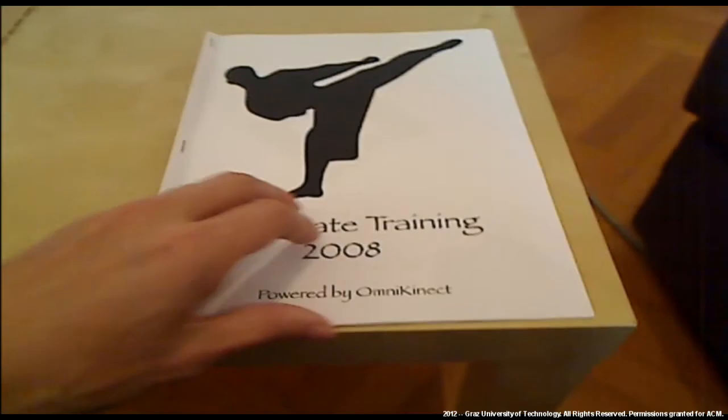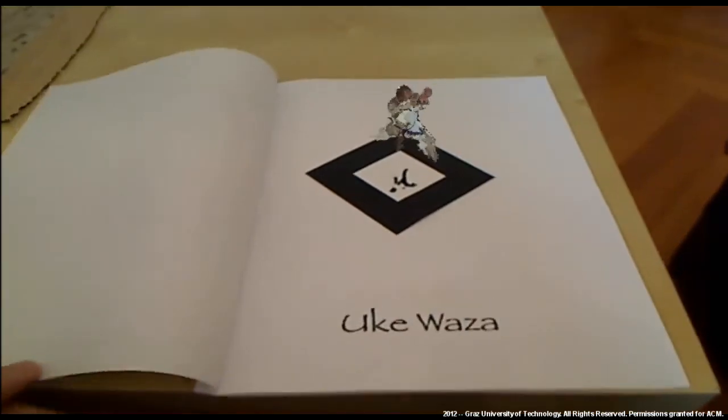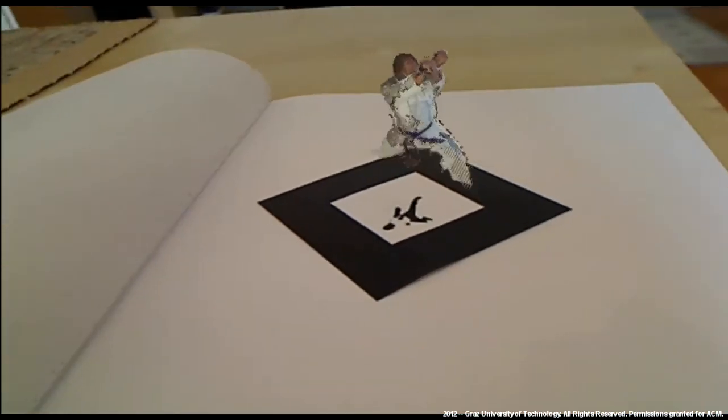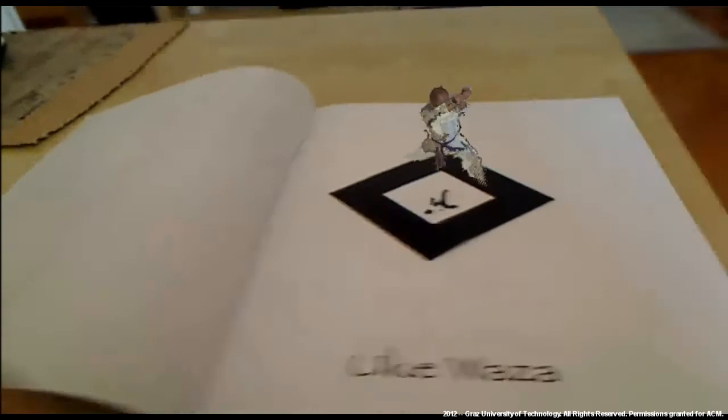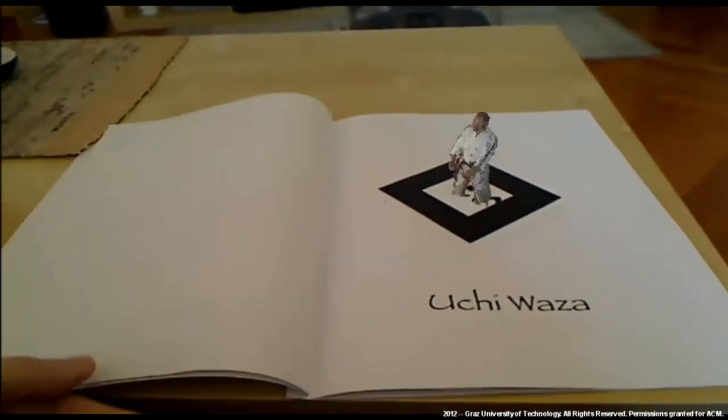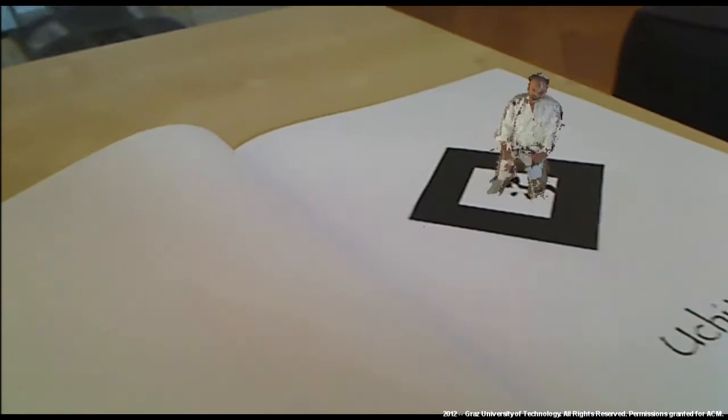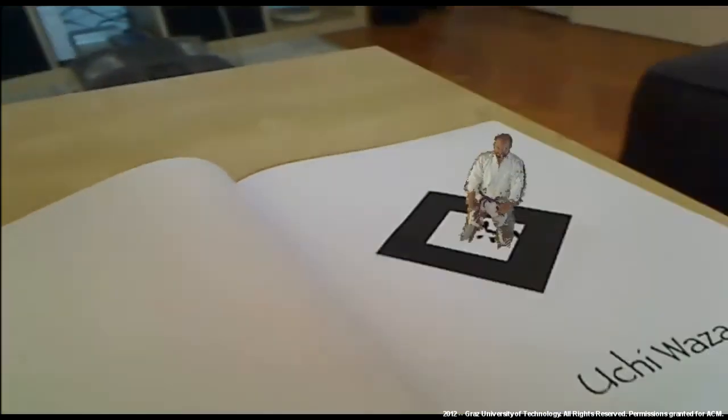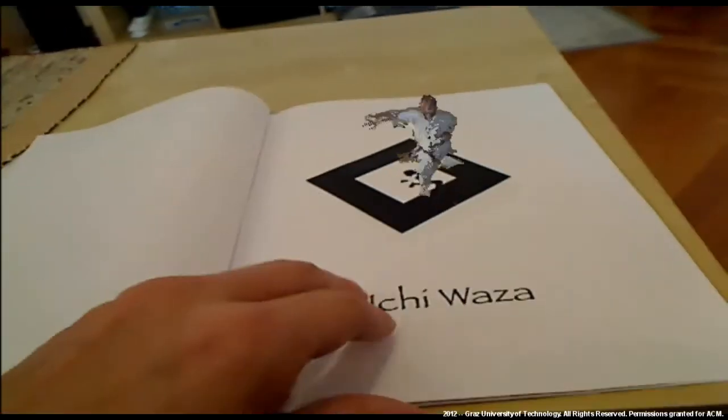The OmniKinect setup can also be used to create an augmented reality magic book. This example shows a personalized 3D photo book of karate training. The training can have been performed by an end user a few years ago. The user can play back the photo book.